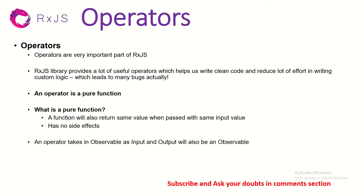So let's talk about operators. What are RxJS Operators? Operators are a very important part of RxJS. The RxJS library provides a lot of useful operators which help us write clean code and reduce a lot of effort in writing custom logic — which actually leads to many bugs. For example, if you have to write your own set interval, set timeout, debounce time, etc., there would be a lot of logic you'd write on your own. But RxJS operators are nothing but pure methods — functions which perform a certain functionality for us. They are built-in, which means you don't have to reinvent the wheel every time.